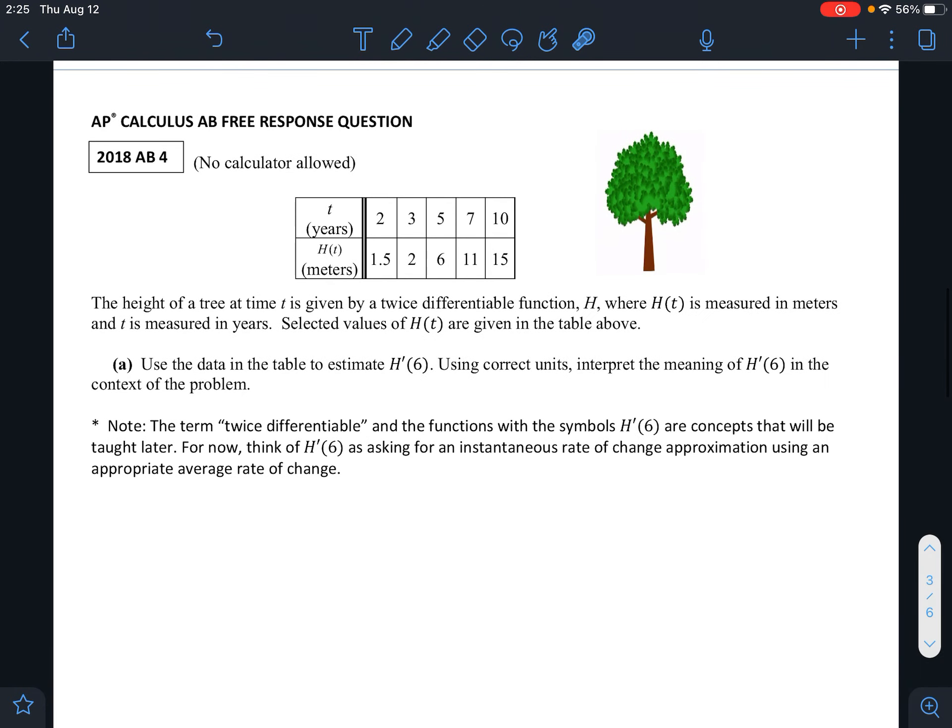Here's an old AP question from 2018, a couple years ago. It says the height of a tree at time t is given by a twice differentiable function h, where h(t) is measured in meters and t is measured in years. Selected values of h(t) are given in the table above. Use the data in the table to estimate h'(6). Using correct units, interpret the meaning of h'(6) in the context of the problem. We don't know what twice differentiable means yet, don't worry. You don't know what h'(6) means, it's h prime of 6. Don't worry about that.